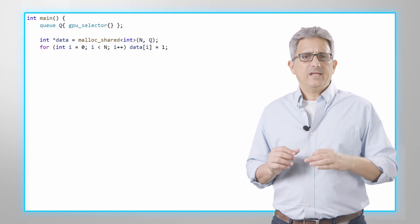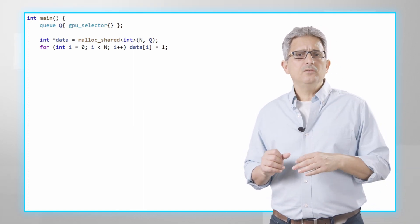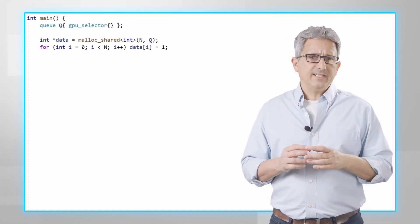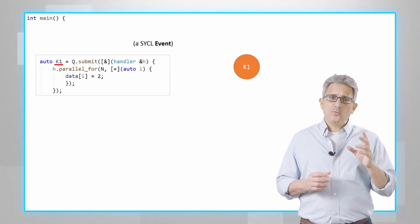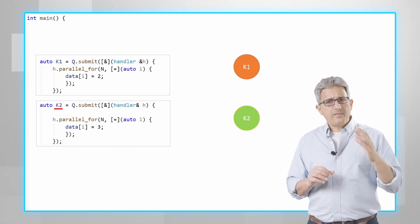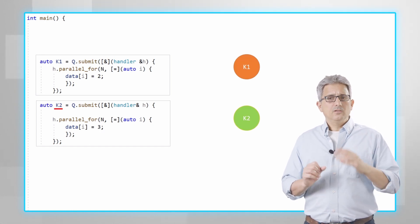Again, I have a queue to the GPU and array of data. I define here a SYCL event and I call it K1, kernel 1, and another event which I call K2, and another one K3.